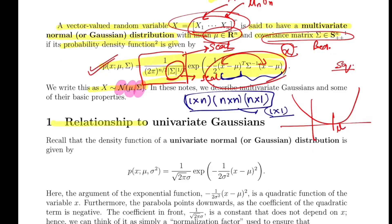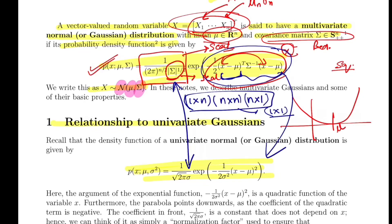They then talk about the relationship between univariate and multivariate Gaussians, trying to establish some connection between the two. They define a density function for univariate Gaussians. The key difference is that covariance has changed to standard deviation sigma, and everything inside the exponent that was written in vector format is now scalar, because you are dealing with one variable at a time.